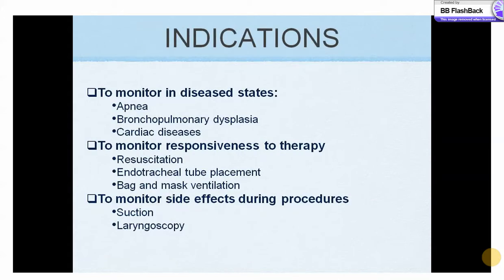Pulse oximetry is used to monitor SpO2 values in disease states like apnea, bronchopulmonary dysplasia, and cardiac diseases. It is used as part of resuscitation as per NRP 2010 to check endotracheal tube placement, effectiveness of bag and mask ventilation, and to monitor for hypoxia during suction and laryngoscopy.